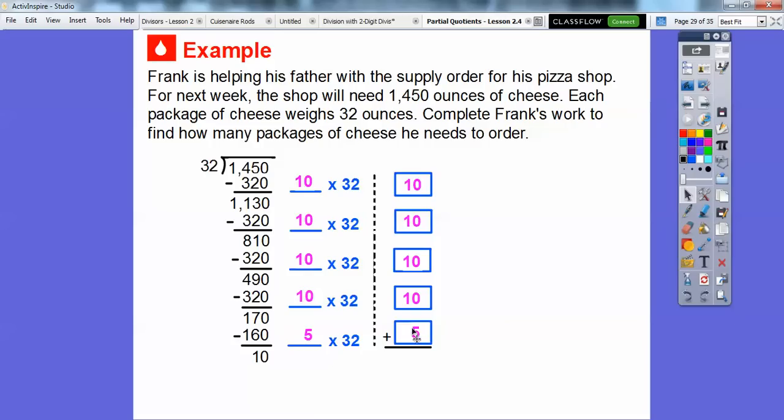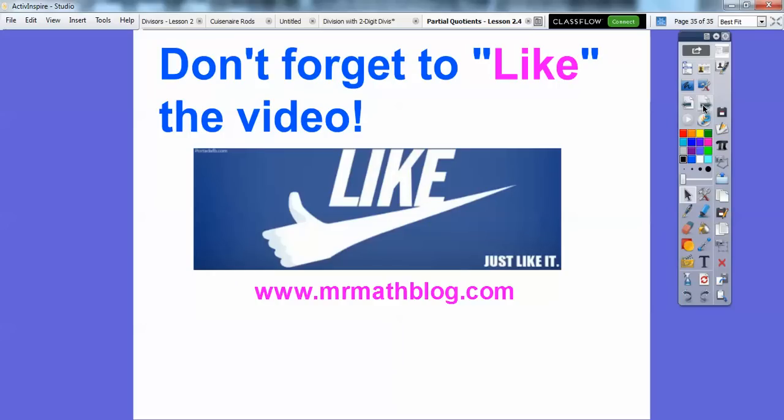Now we're going to add up these partial quotients right here. The remainder is that 10 right here. So 1,450 divided by 32 is going to be this 45 with the remainder of 10. How many packages of cheese is Frank going to have to buy? He can't buy a remainder of 10. He's going to have to buy 45, but he needs some more for this remainder part. So he's going to have to need 46 packages right there. So the remainder says we're going to have to round up on that. I hope you're having a great year. Take care.